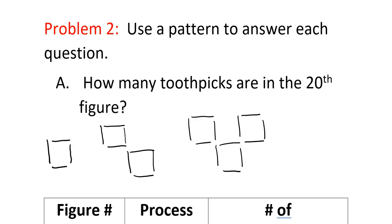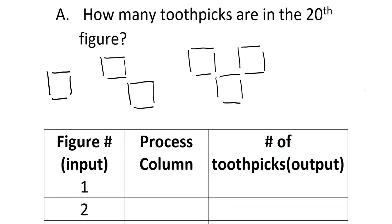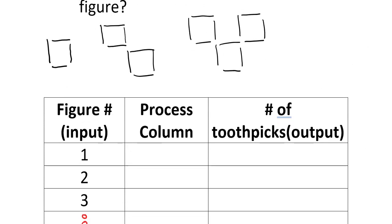Tables are especially helpful when we need to find the 20th, 108th, or 1000th figure — we don't want to draw all of them. Problem two: how many toothpicks are in the 20th figure? In the first figure there are four toothpicks. In the second figure there are eight. In the third figure there are twelve. We'll use a table to find the pattern without drawing each one.